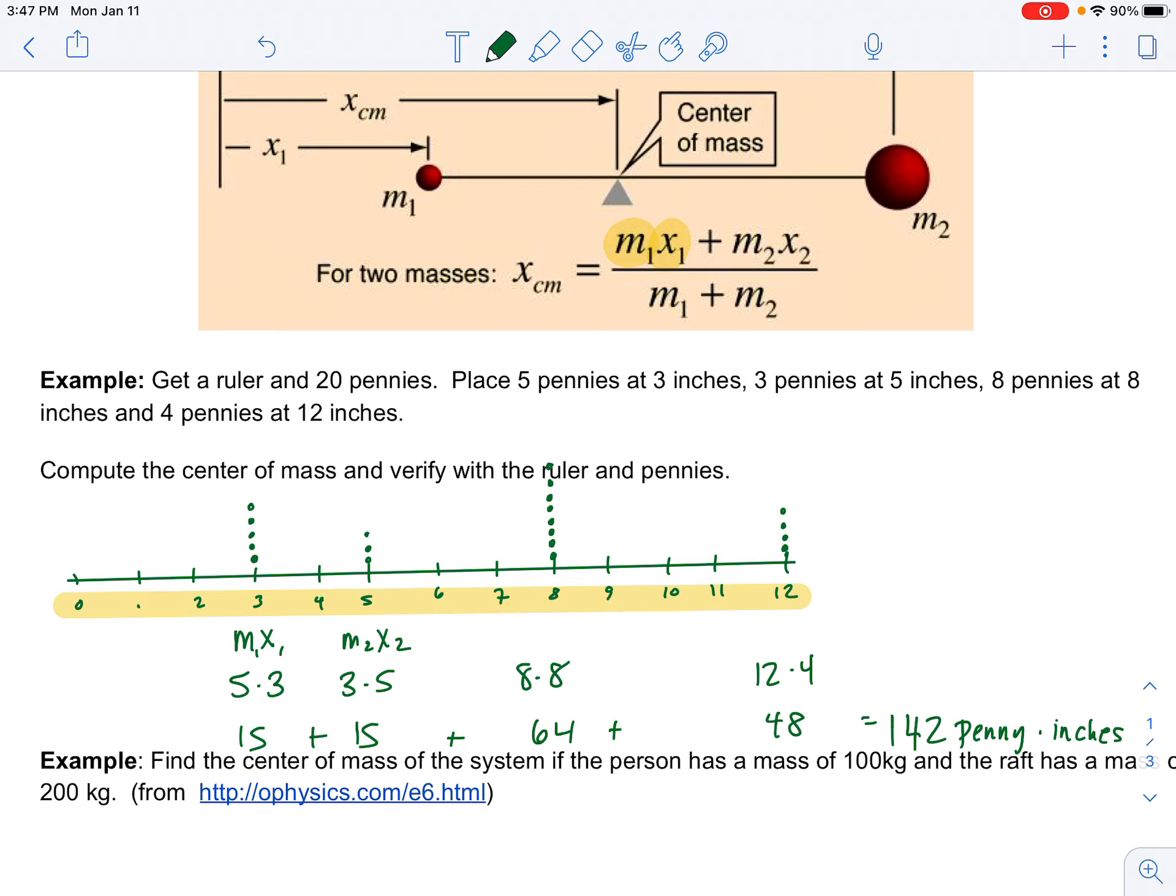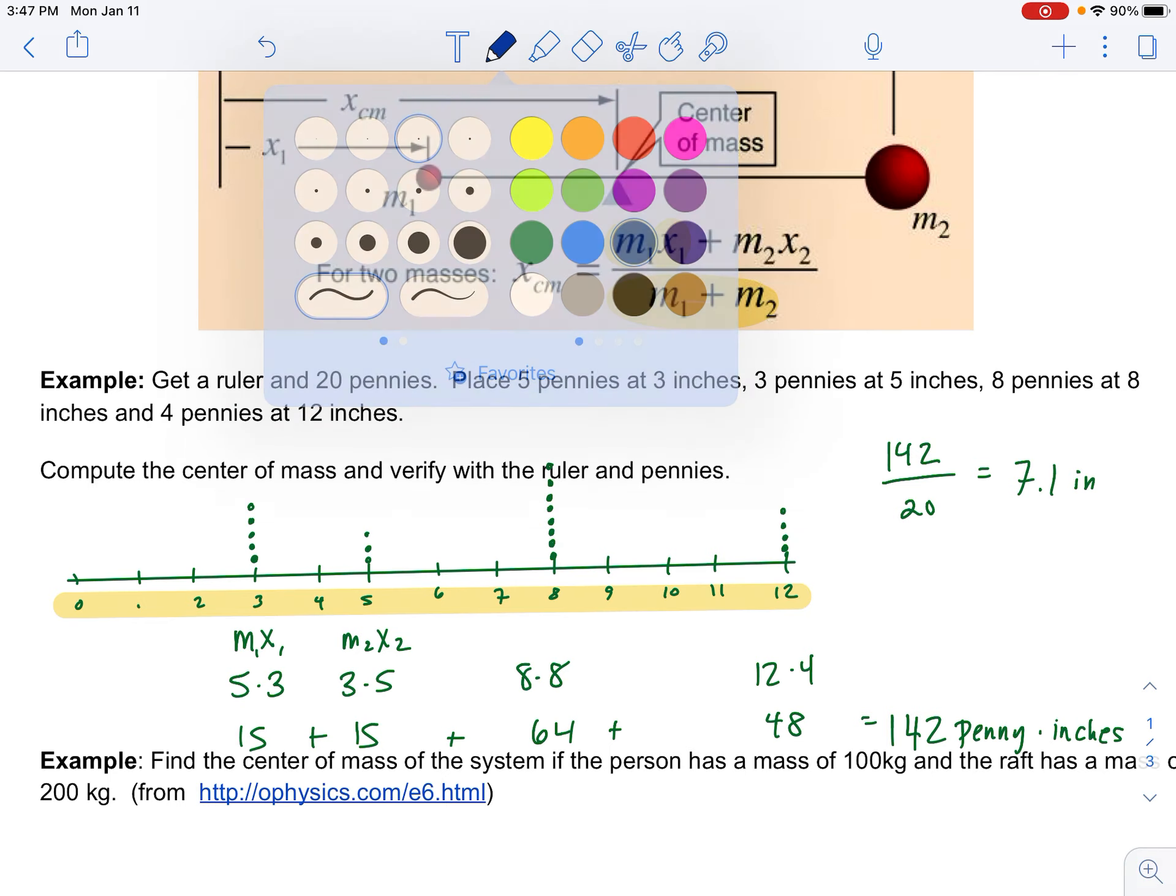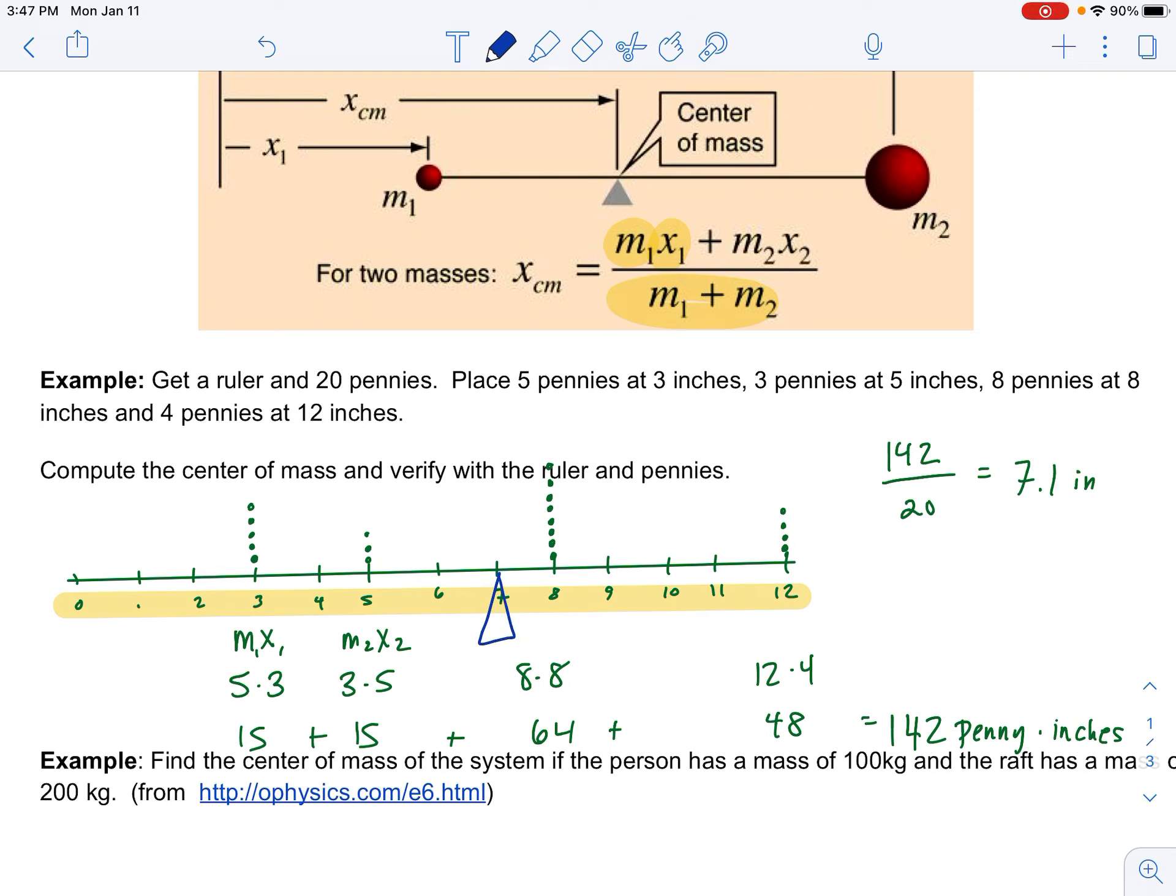Now to find the center of mass, what I'm going to do is divide by the total number of mass. So I'm going to take 142 and divide by my 20 pennies, and I get 7.1. So this object should balance about here. If I put a pivot there, that's where it should balance.